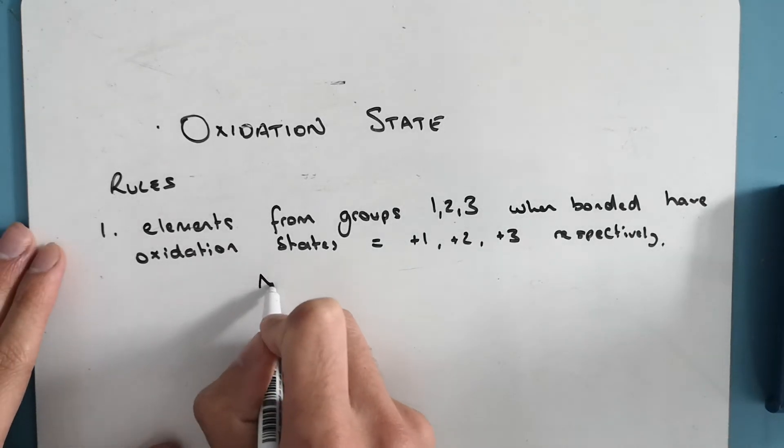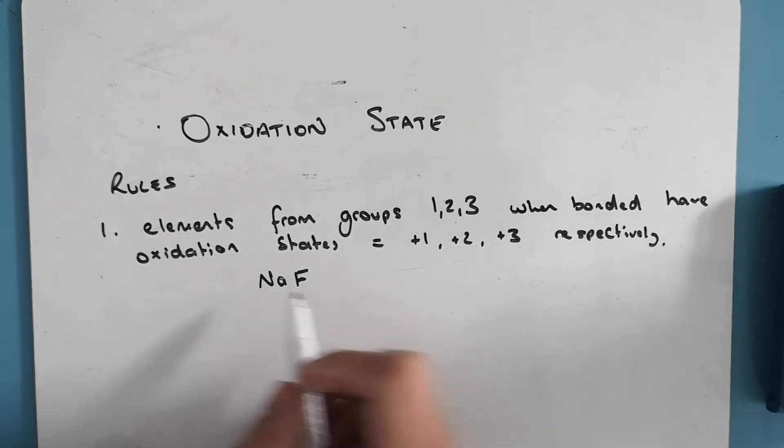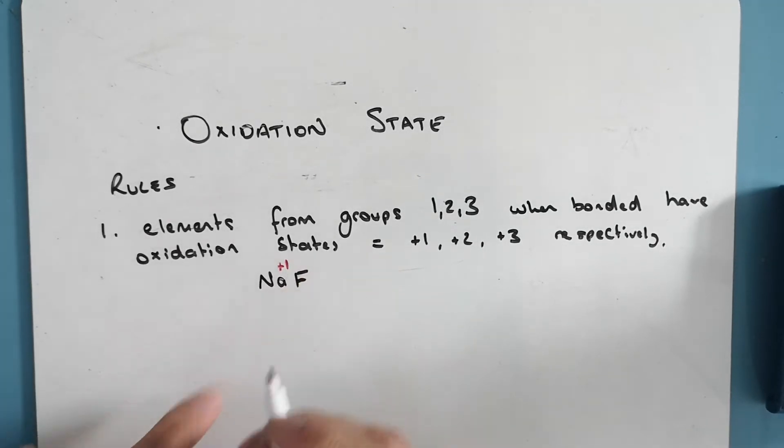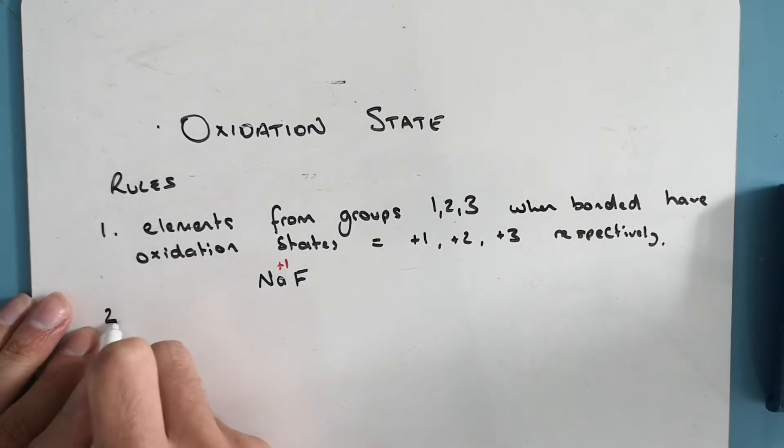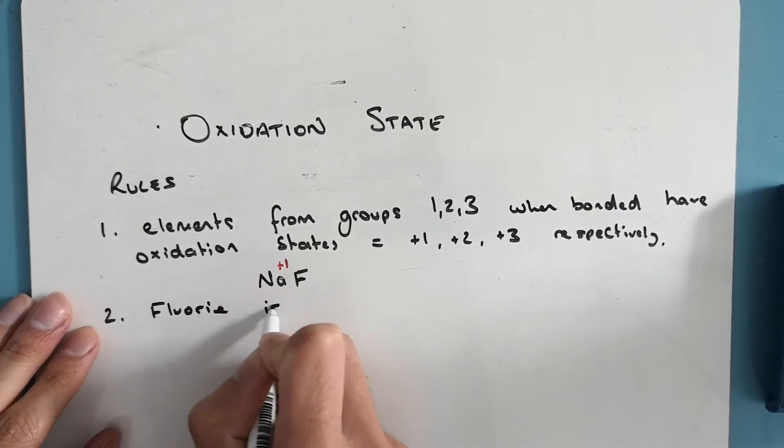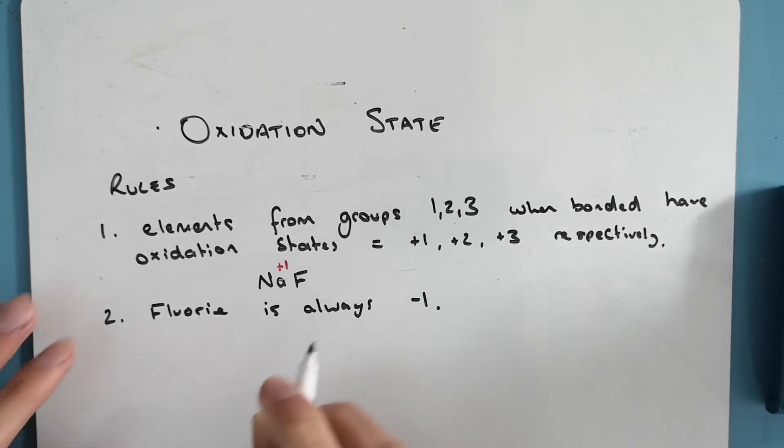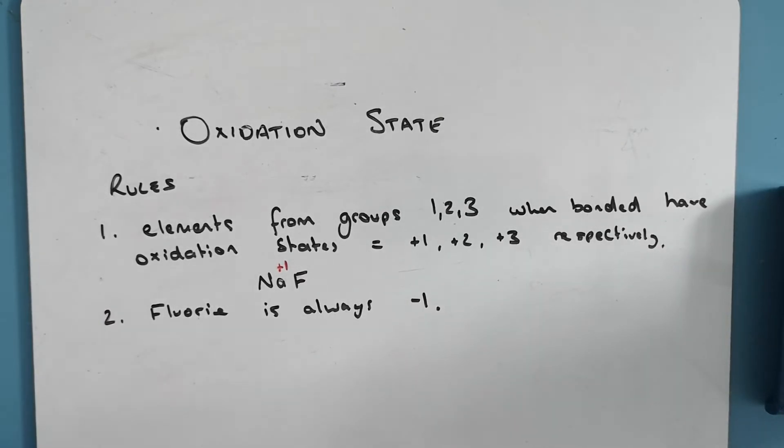So if we take sodium fluoride, NaF, here we've got sodium and fluoride. Sodium is group one, so sodium is plus one. Two, fluorine is always minus one. It's the most electronegative atom, so it always manages to draw electrons towards it.